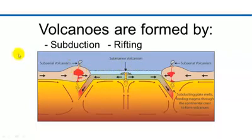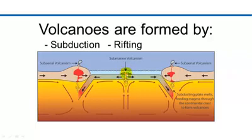Another way is through rifting. In this case, two plates are pulling apart from each other, and in that thinner area, magma is able to rise and erupt at the surface. In this case, the eruptions are occurring on the ocean floor.